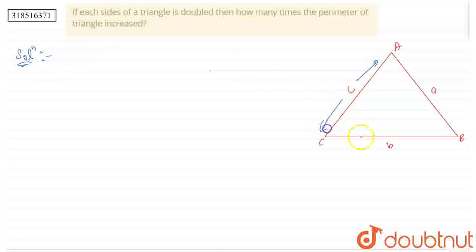I have made a rough triangle with sides a, b, and c. This is the original triangle. What is the original perimeter? Perimeter equals a plus b plus c.